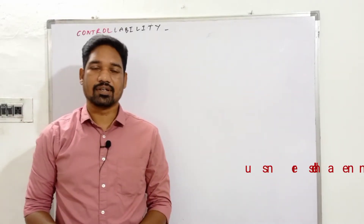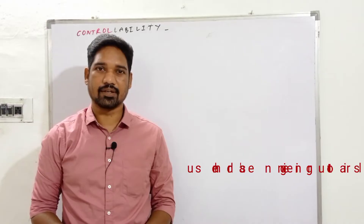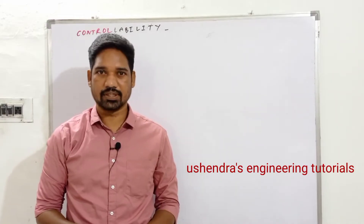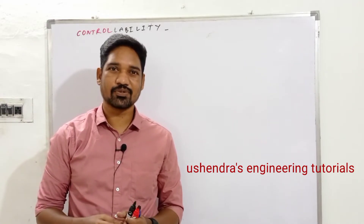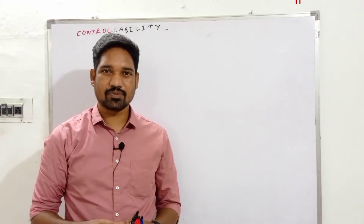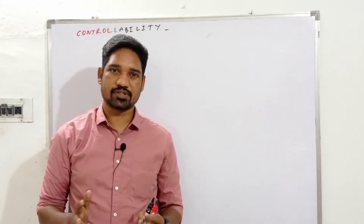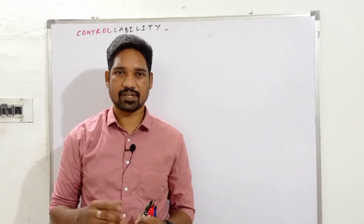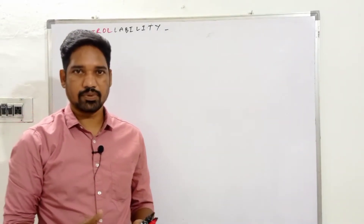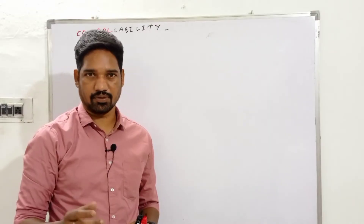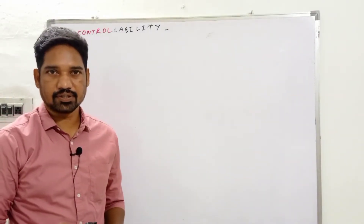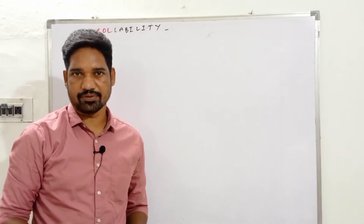Hi. Control systems and state space analysis is a very important topic, and the most important thing is checking the system for controllability and observability. If you look at previous exam questions, it's a frequently tested topic. If you don't have matrix multiplication skills, it will be tough. The easier approach is Kalman's method to evaluate the controllability and observability of a given state space system.